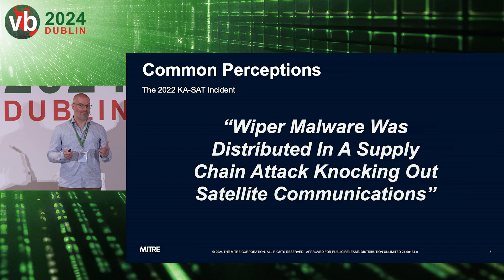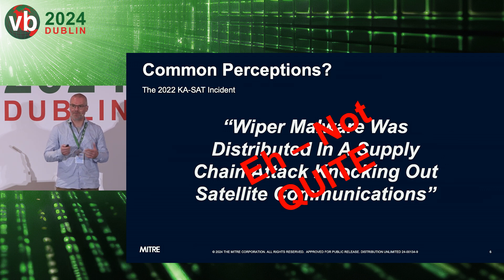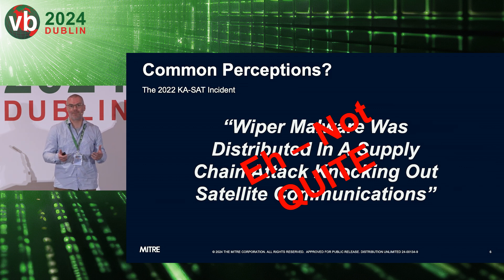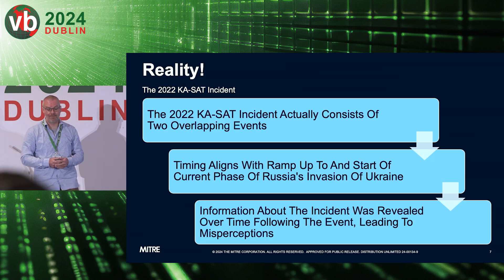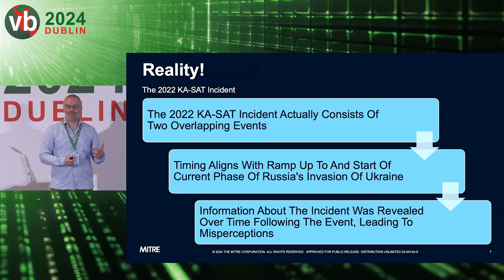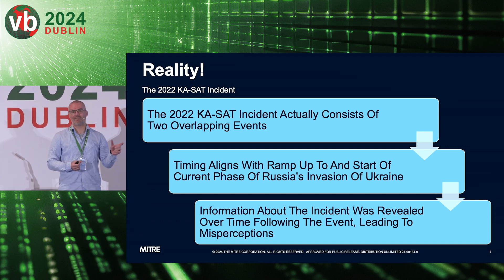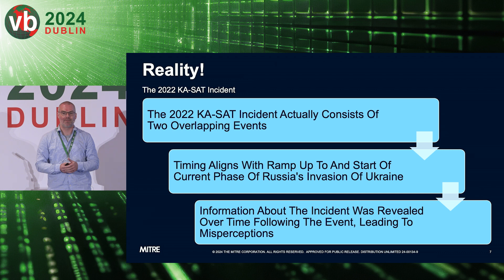That's not wrong, but it's also not the complete view on what happened, because there is more going on here. Several aspects of this intrusion didn't get well understood — chief among them being lack of evidence and information. It really wasn't until later revelations and disclosures that certain aspects became clear, because the reality is that the 2022 KA-SAT incident actually consists of two overlapping events. The timing aligns closely with the initial ramp-up to and start of Russia's invasion of Ukraine in late winter 2022.